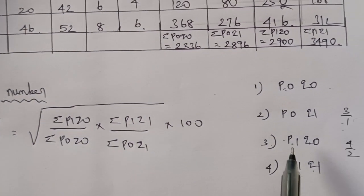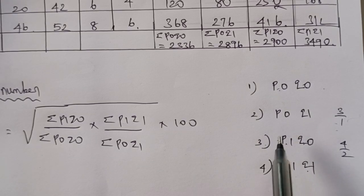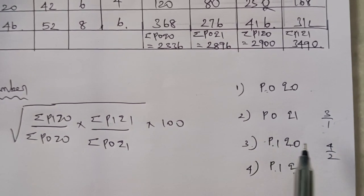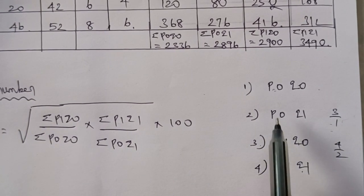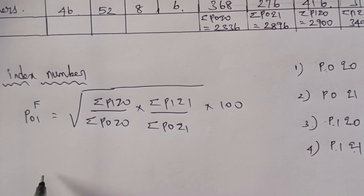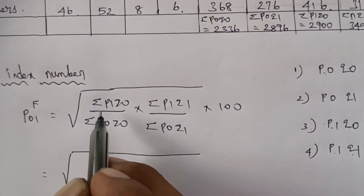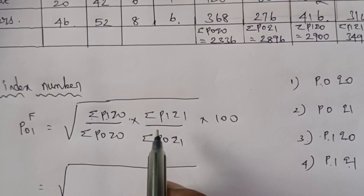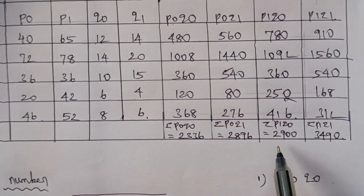That is the ordered version. We need to use all the sums. The Fisher index number formula is: shortcut 3 by 1 into 4 by 2. Equal to square root of the entry. Now we need to enter the information. Summation P1Q0 — enter P1 and Q0 — enter the information: 2900.